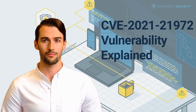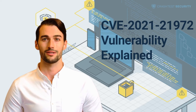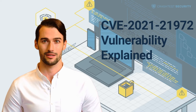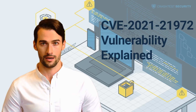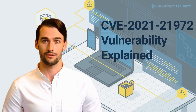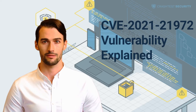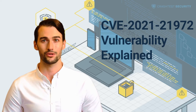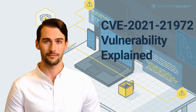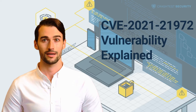The CVE-2021-21972 is a remote execution vulnerability that allows attackers to run code on operating systems that host the VMware vCenter Server. The vulnerability is prevalent on VMware machines that use the vRealize Operations vSphere plugin, enabling attackers to issue malicious commands through publicly accessible ports. As the vRealize Operations vCenter plugin is included in all default installations of vCenter Server, all VMware vCenter endpoints are considered vulnerable, regardless of whether they use vRealize Operations for cloud automation.